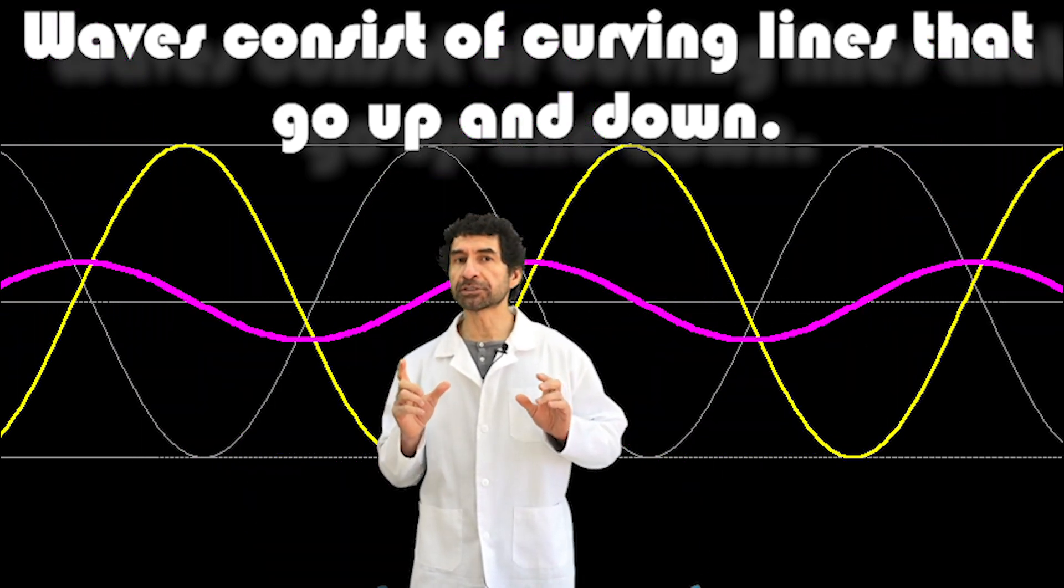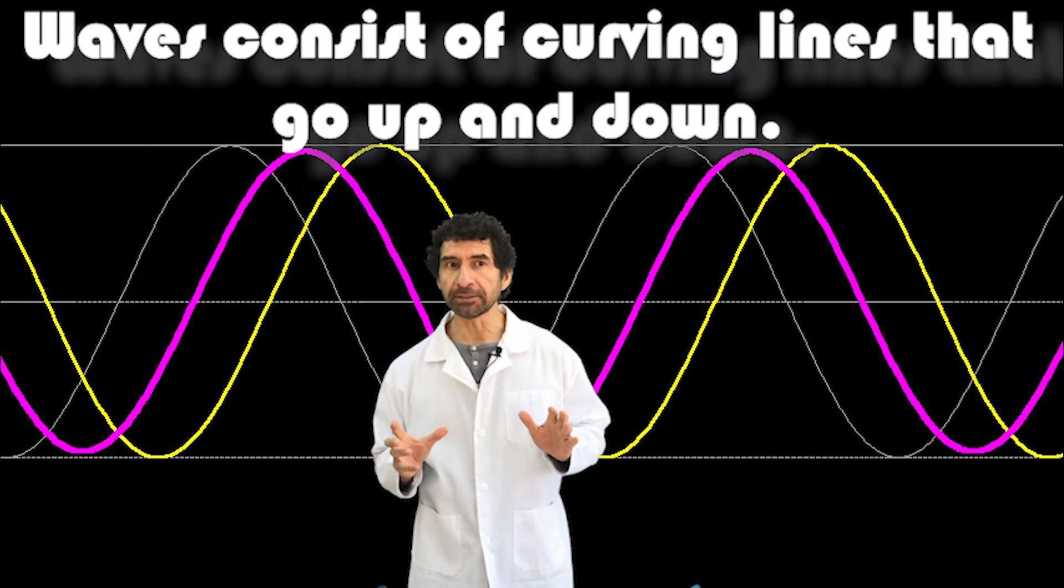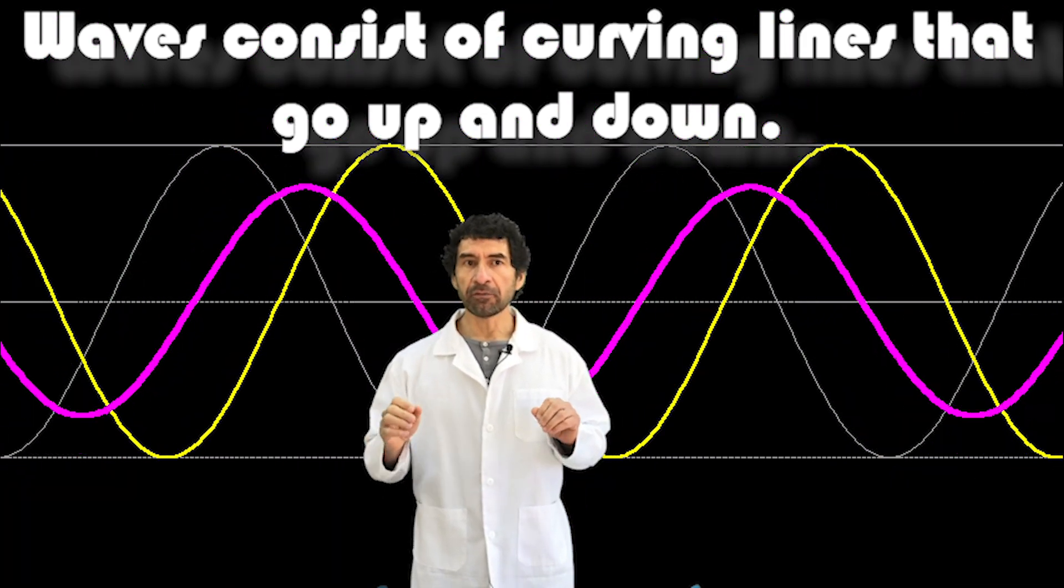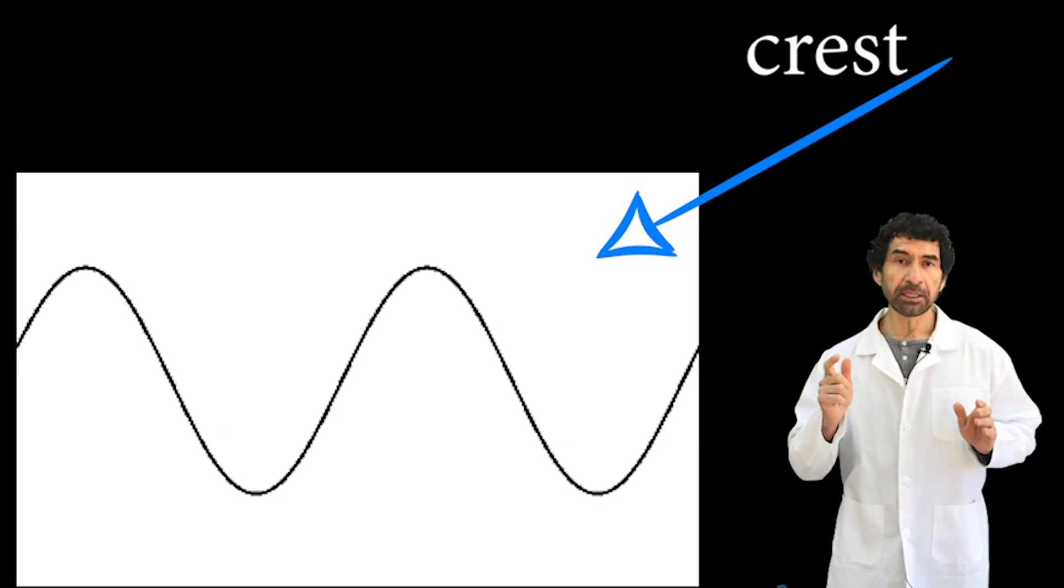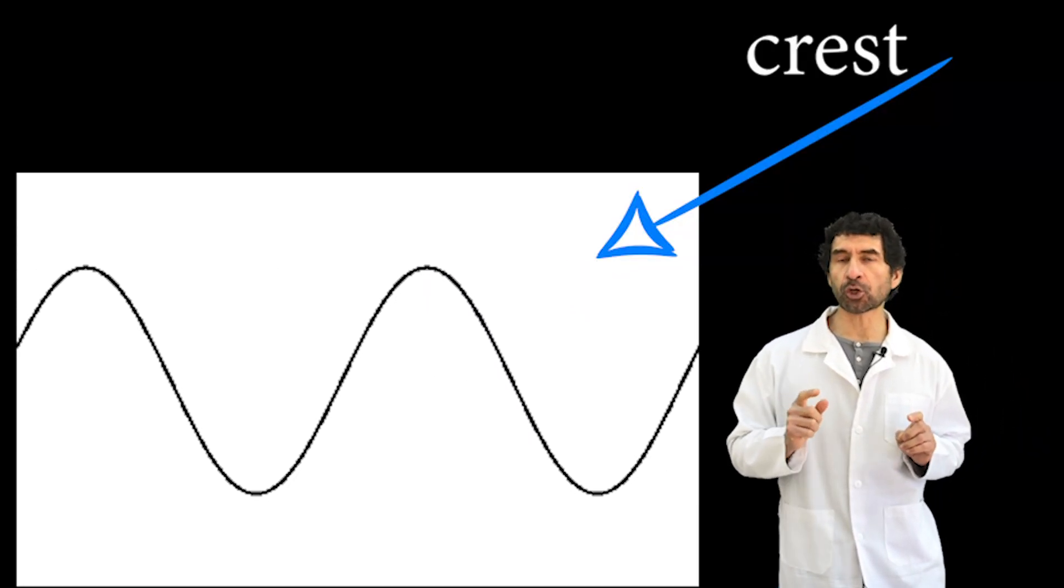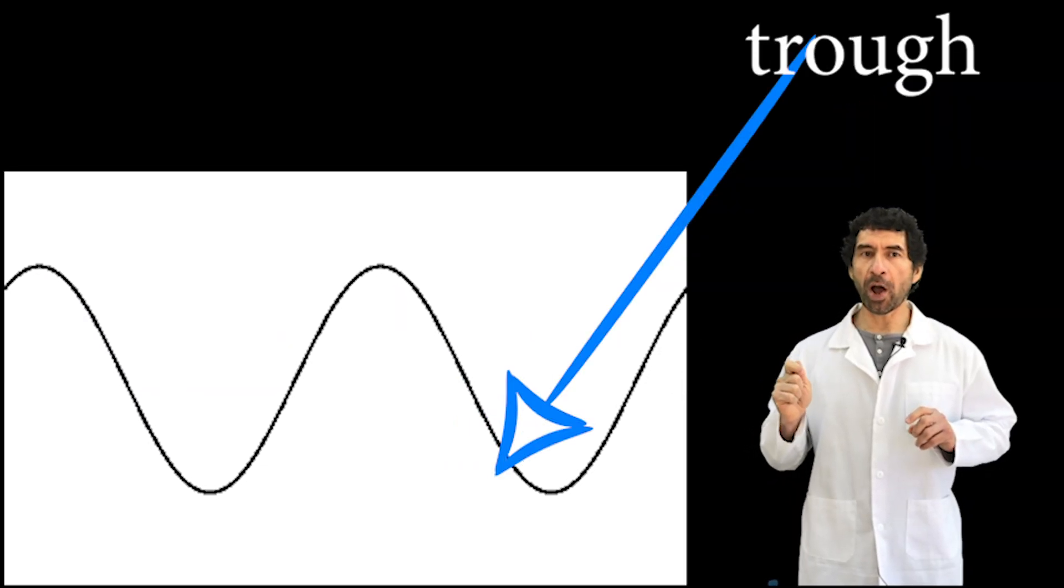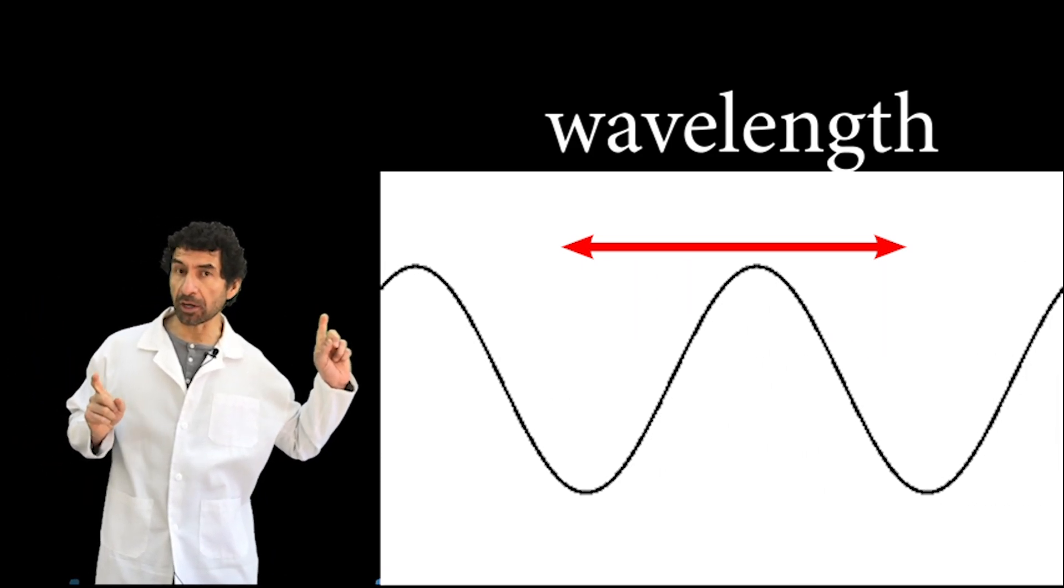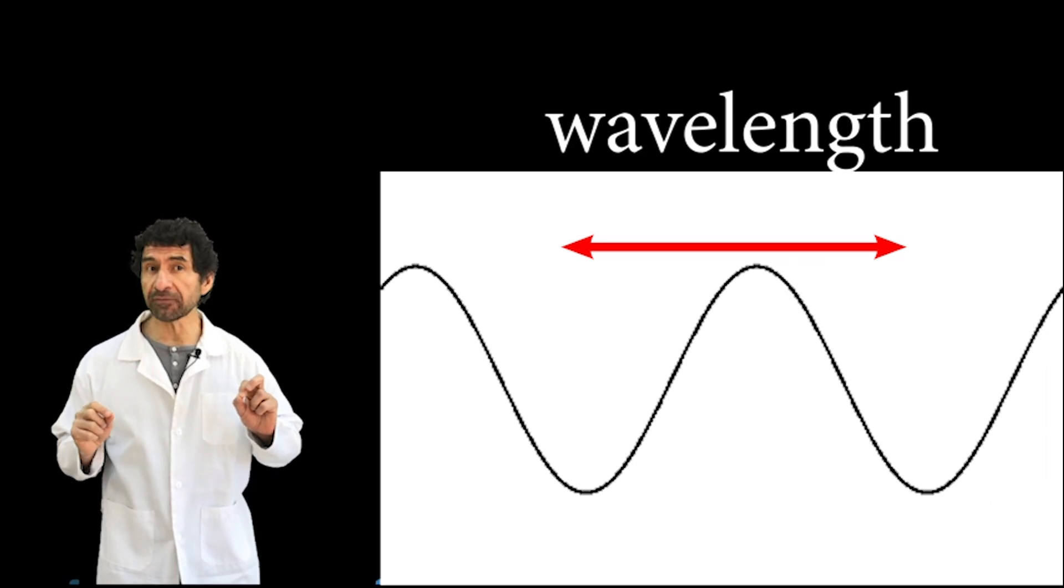Waves consist of curving lines that go up and down as they move away from the sound source. Each point of a wave is called a crest, while each low point is called a trough. The distance from one crest to the next crest is the wavelength.